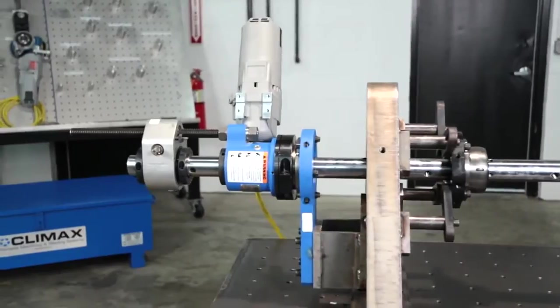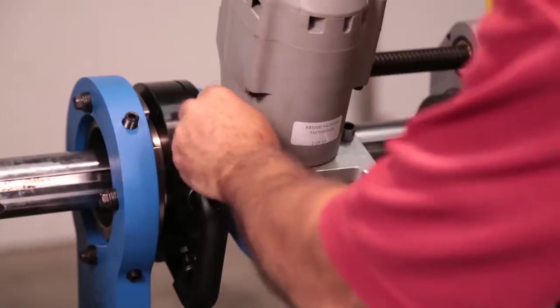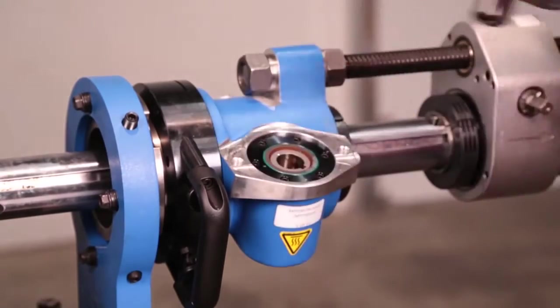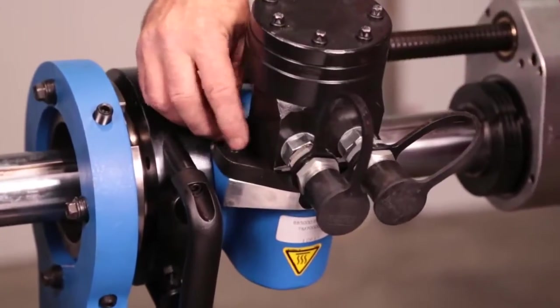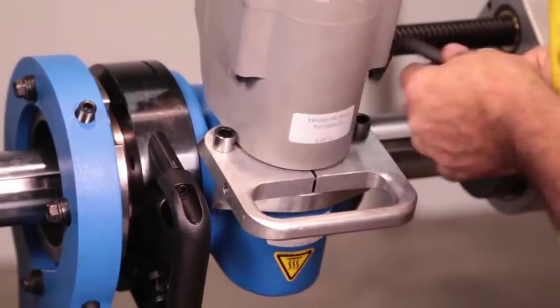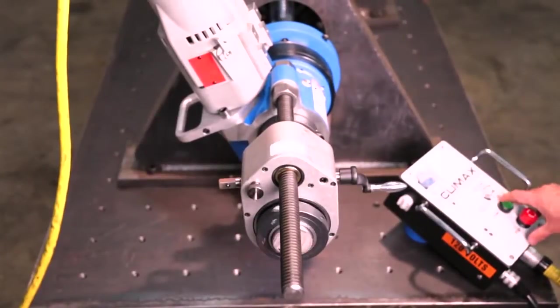The BB5000 is available in electric, servoelectric, hydraulic, or pneumatic motor configurations. Switching to a different motor option is quick and easy with a 2-bolt change-out process. Connect your power source.